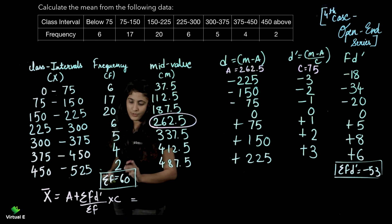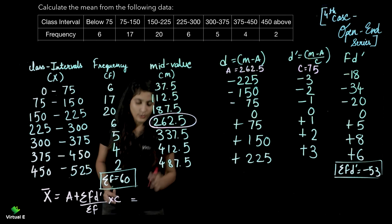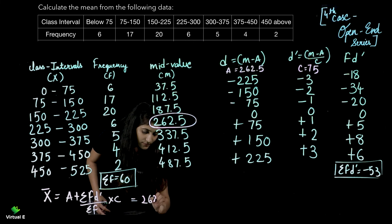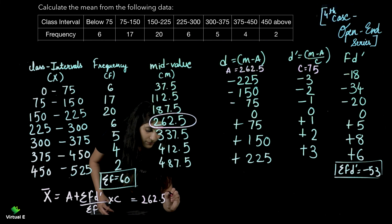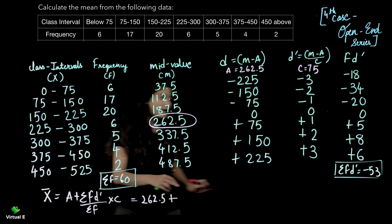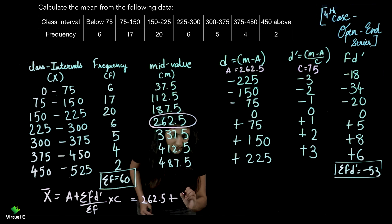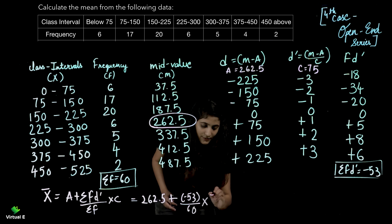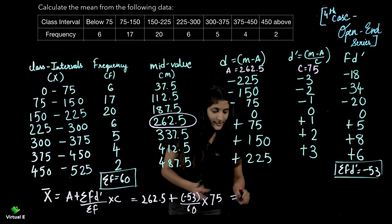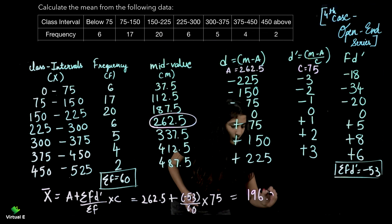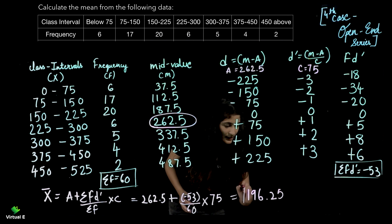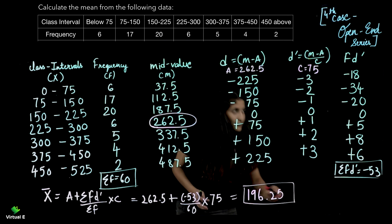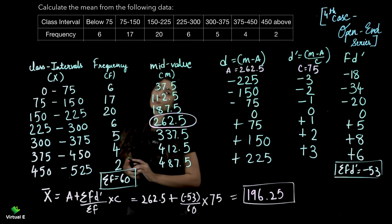Humare paas sari values hain. A is 262.5 plus Sigma F D dash is minus 53 upon Sigma F which is 60, into C which is 75. On calculating this, you get the answer which is 196.25. This is the final answer for the fourth case. Let's move on to the fifth case.